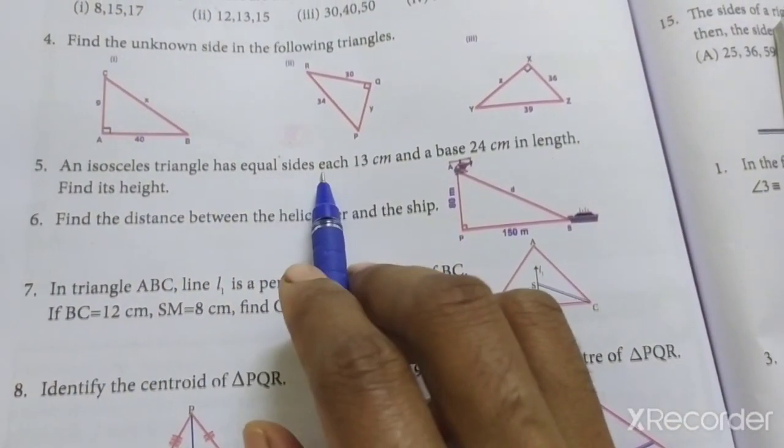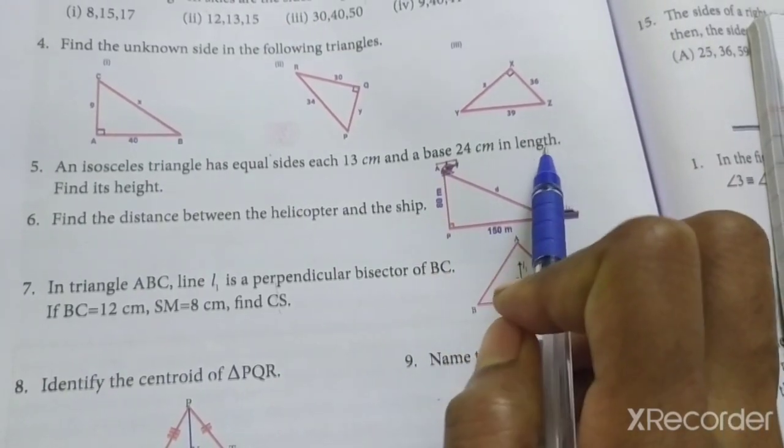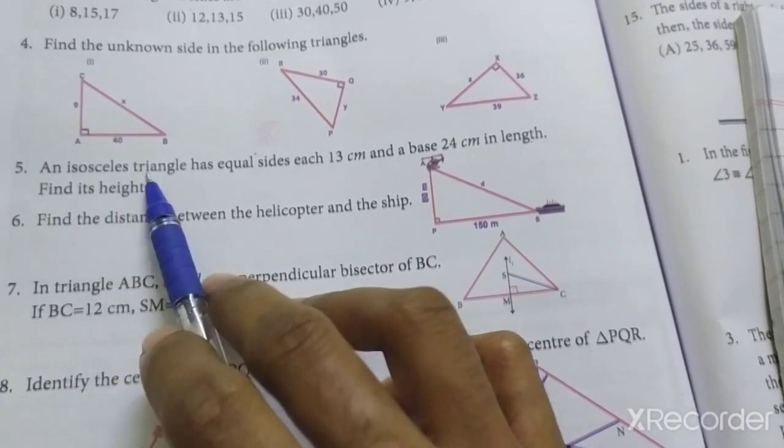An isosceles triangle has equal sides, each 13 cm, and base is 24 cm in length. Find its height.